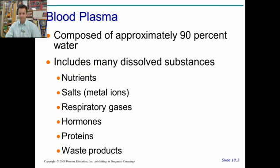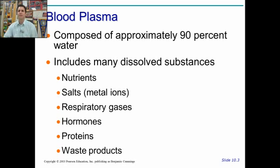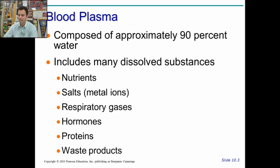Let's focus in on the plasma. It's 90% water — mostly water — with lots of stuff dissolved: salts like sodium chloride, respiratory gases like oxygen and carbon dioxide, nitrogen gas, nutrients, various hormones like growth hormone, proteins that transfer info from cell to cell, and waste products like urea and CO2.